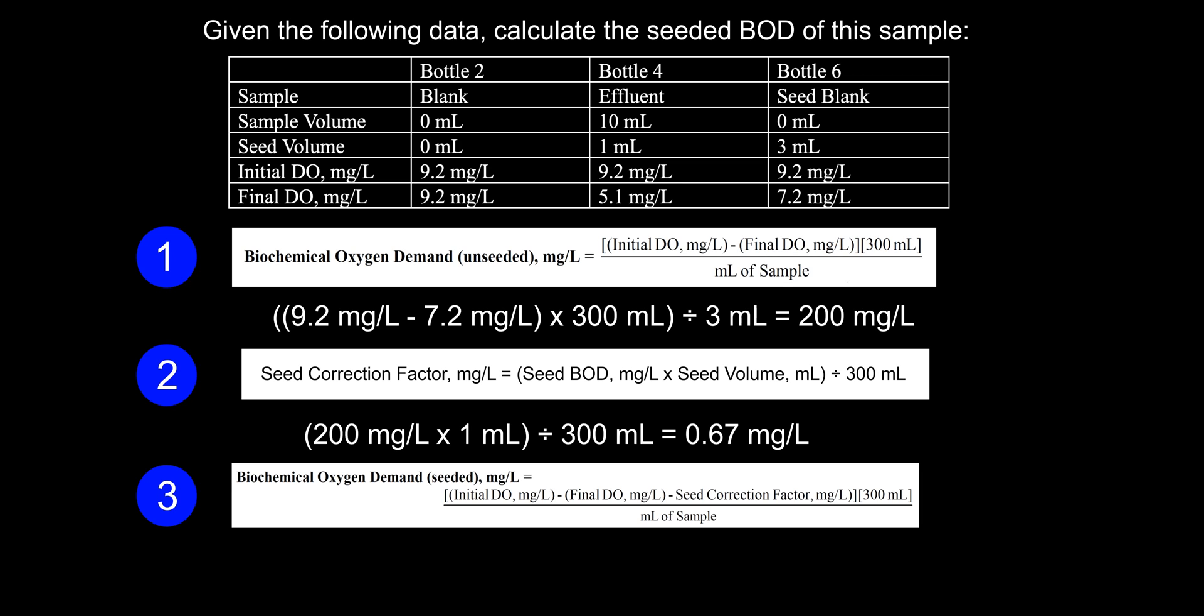Now we can figure out how much BOD is in the effluent sample. The BOD seeded equation for part three is included on the exam. So first, we will subtract the initial and final DO of the effluent sample, which is 9.2 minus 5.1, which equals 4.1. Now let's subtract our seed correction factor from this, 4.1 minus 0.67, giving us 3.4 milligrams per liter. When putting this in your calculator, you might get an answer of 3.43. However, if we are taking significant figures into account, it should only be 3.4. If you don't understand significant figures, that's fine. Using 3.43 gives you a pretty close answer as well. So from here, we'll multiply 3.4 by 300, which equals 1020, and divide that by how many milliliters of effluent was used in bottle 4, which is 10 milliliters. This gives us a final answer of 102 milligrams per liter, which was the correct answer, choice D.